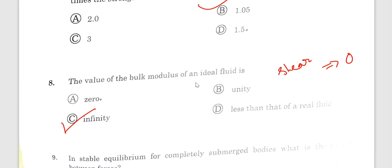Bulk modulus of the ideal fluid. Ideal fluid bulk modulus is infinite and the shear modulus is zero. Option C is the correct answer.